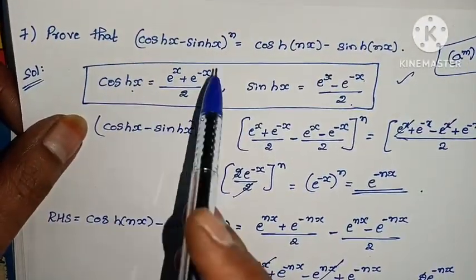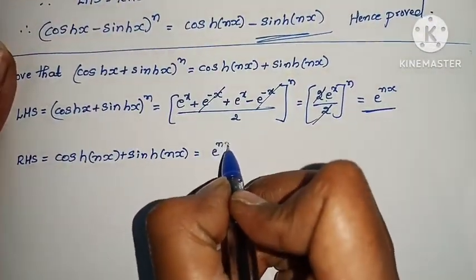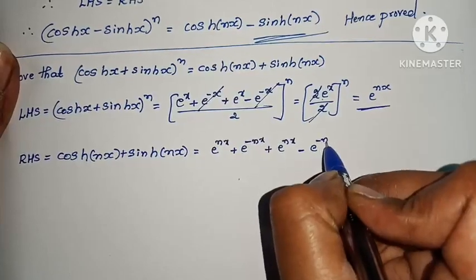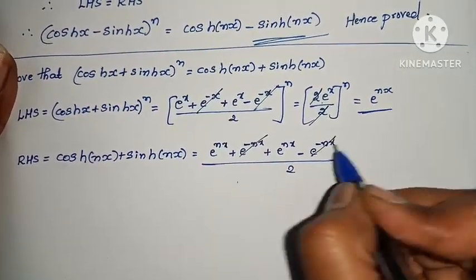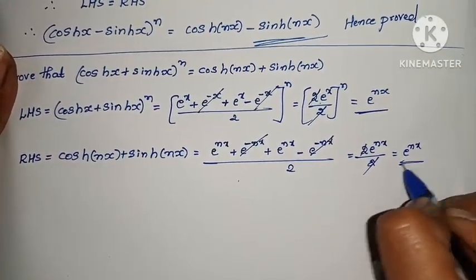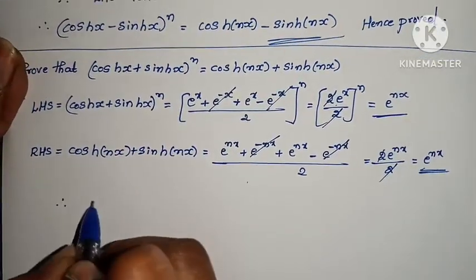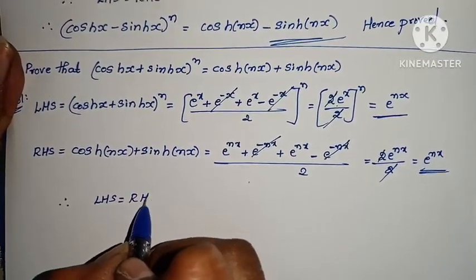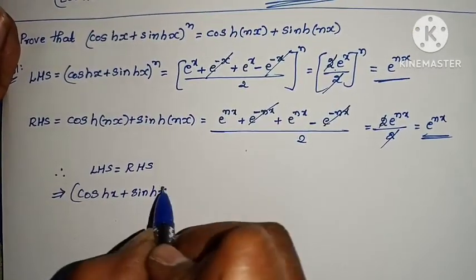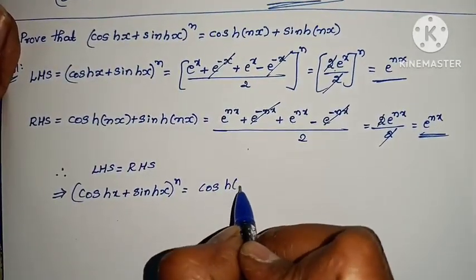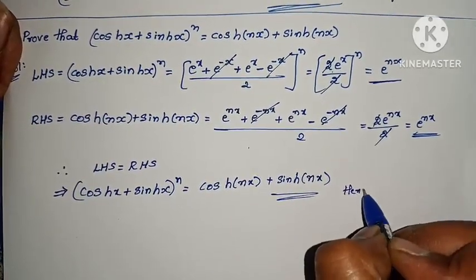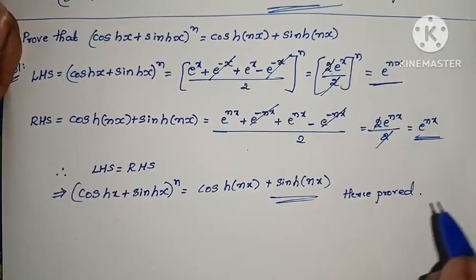LHS = RHS = eⁿˣ. Therefore (cosh(x) + sinh(x))ⁿ = cosh(nx) + sinh(nx). Hence proved. Problem complete.